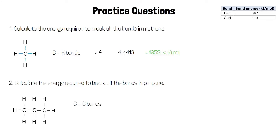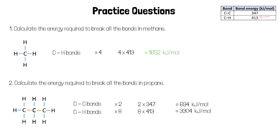Propane has some carbon-carbon bonds — there are 2 of these in a molecule of propane. Each carbon-carbon bond requires 347 kJ per mole to break, so 2 times 347 gives 694 kJ per mole. There are also 8 carbon-hydrogen bonds. Each requires 413 kJ per mole to break, so 8 times 413 gives 3,304 kJ per mole. The total to break all bonds in propane is 694 plus 3,304, which is 3,998 kJ per mole.